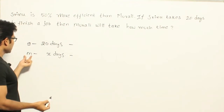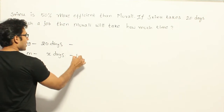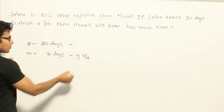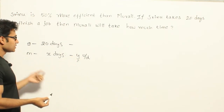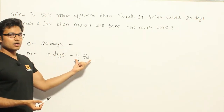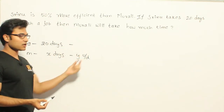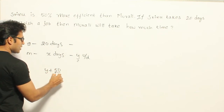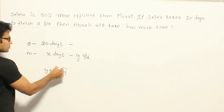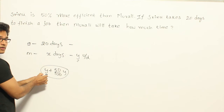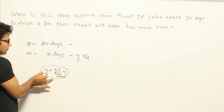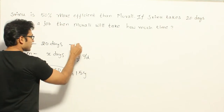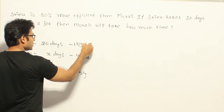So if you assume that the rate at which Murali is working is Y units per day, then Sreedoo is 50% more efficient. Whenever they say more efficient, you are supposed to compare with the rate at which they are doing the work. So Y plus 50/100 into Y should be Sreedoo's speed. So Sreedoo's speed will be 1.5 into Y units per day.